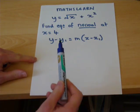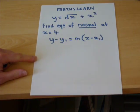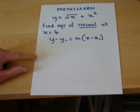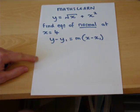However, a normal is just a straight line, so it has the general equation as given below. And for this, we need a coordinate and the gradient.